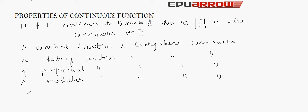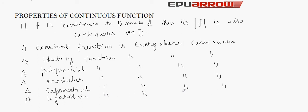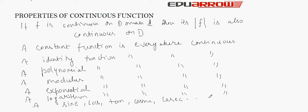An exponential function is everywhere continuous. A logarithm function is everywhere continuous. A sine function, cosine function, tangent function, cosecant function, and other trigonometric functions are continuous everywhere.